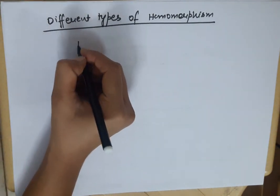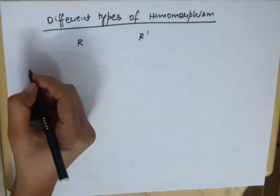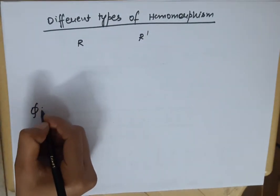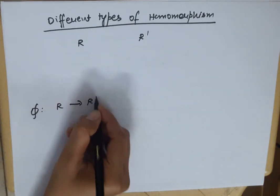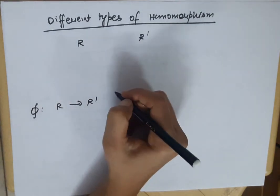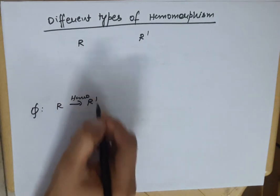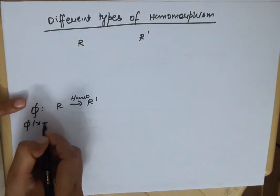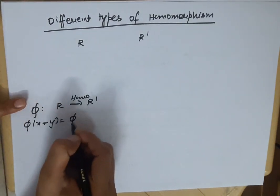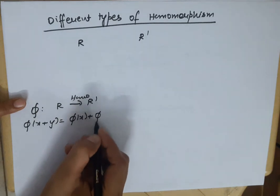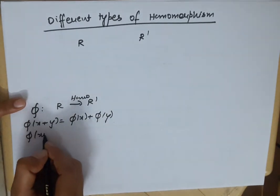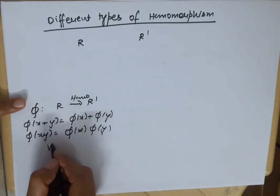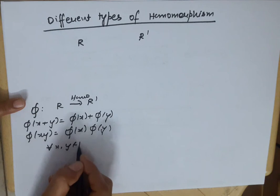We have two rings R and R', and a homomorphism φ from R to R'. Two conditions are being satisfied here: φ(x + y) = φ(x) + φ(y), and φ(xy) = φ(x)φ(y), for all x, y belonging to R.